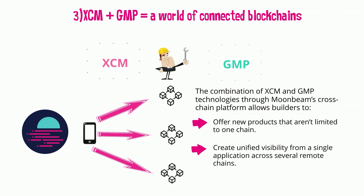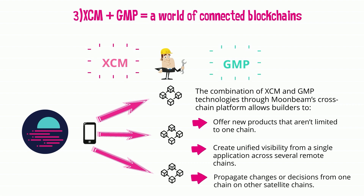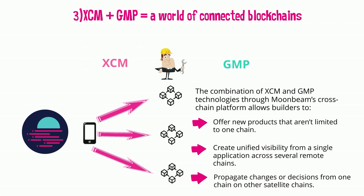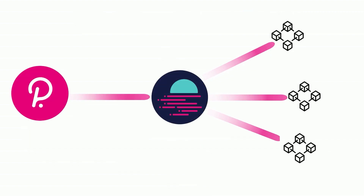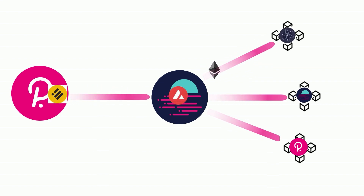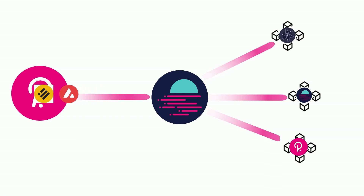The combination of XCM and GMP technologies through Moonbeam's cross-chain platform allows builders to offer new products that aren't limited to one chain without the need to bring them over via traditional bridges. Builders can create unified visibility from a single application across several remote chains, and propagate changes or decisions from one chain to other satellite chains by allowing data to flow across chains — a huge step for Web3 and decentralized governance. More generally, it will connect the Polkadot ecosystem to the outside world through a single connection to Moonbeam, allowing Polkadot assets such as DOT and GLMR to flow to other chains, and allowing outside assets such as ETH and USDC to flow into Polkadot parachains without the security issues resulting from the use of bridges.